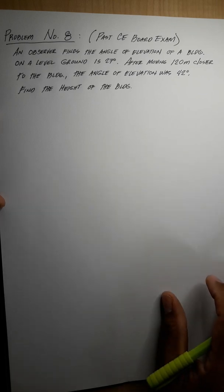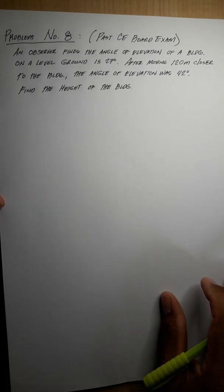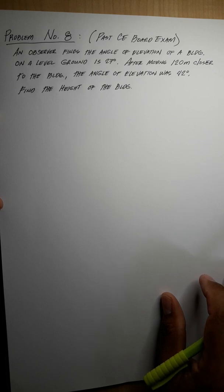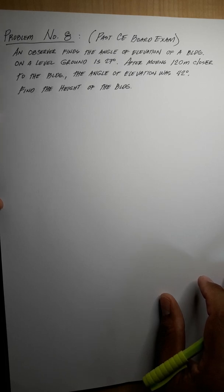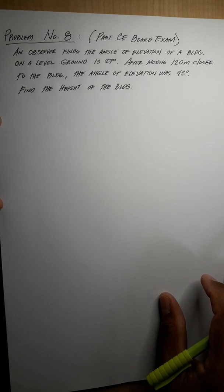Problem number eight, a past CE board exam. An observer finds the angle of elevation of a building on the level ground is 27 degrees. After moving 120 meters closer to the building, the angle of elevation was 42 degrees.